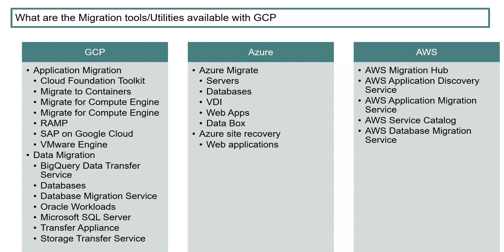For data migration, BigQuery Data Transfer Service automates data movement into BigQuery with zero coding — it provides the foundation for a BigQuery data warehouse and supports data backfills to recover from outages or gaps. For databases, the Database Migration Service offers easy migration, reduces complexity, and provides a serverless experience that eliminates operational burden. It also supports migrating from proprietary licenses to open-source and cloud-native databases.